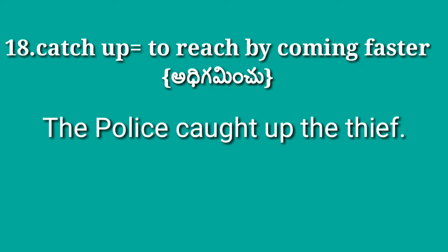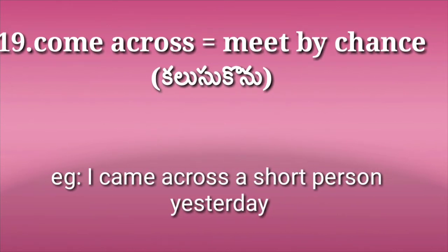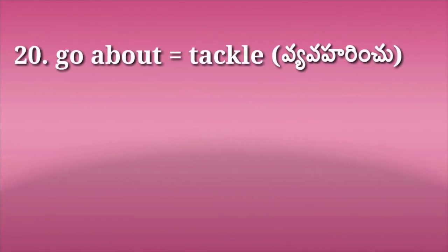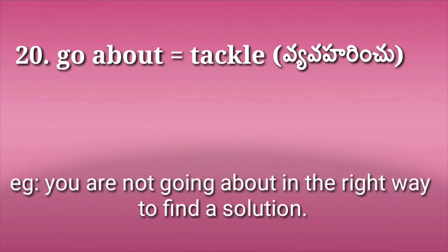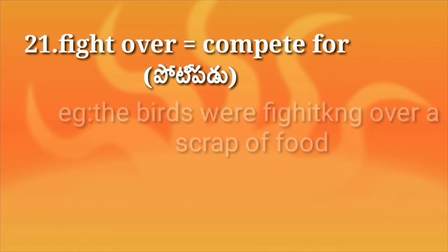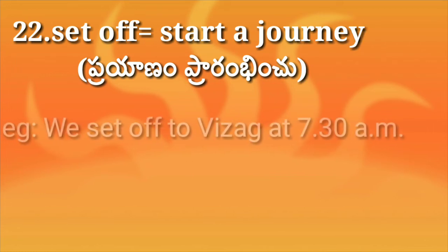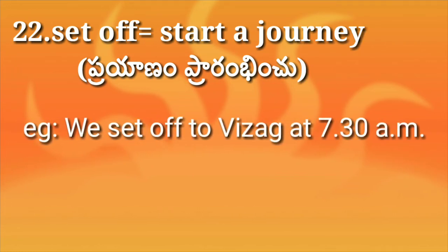Next: 'catch up,' which means to reach someone by coming faster. Example: The police caught up with the thief. Next: 'come across,' which means to meet by chance. Example: I came across a short man yesterday. Next, the 20th one: 'go about,' which means to tackle something. Example: You are not going about the interview correctly. Next: 'fight over,' which means to compete for something. Example: The birds were fighting over a scrap of food.